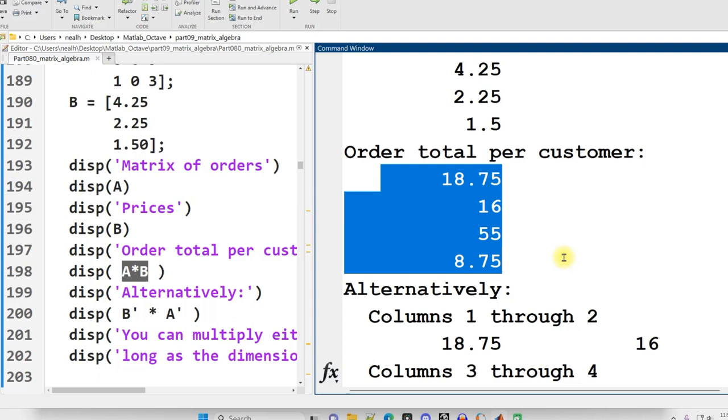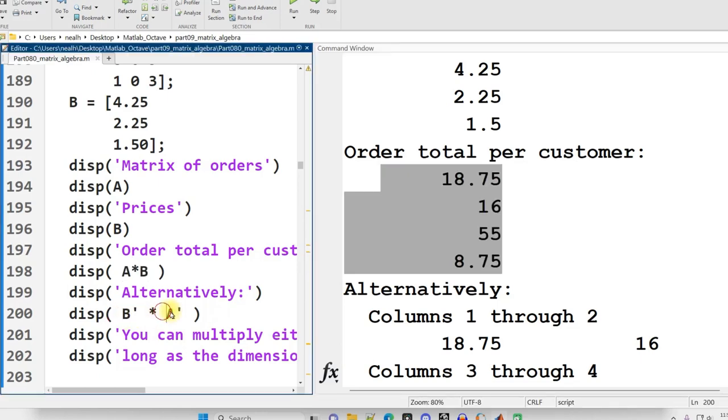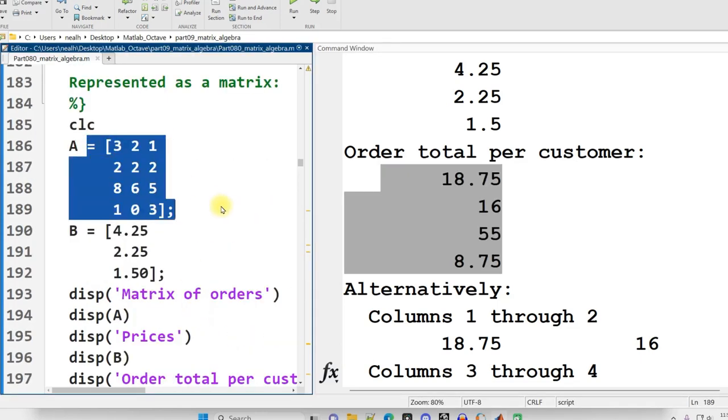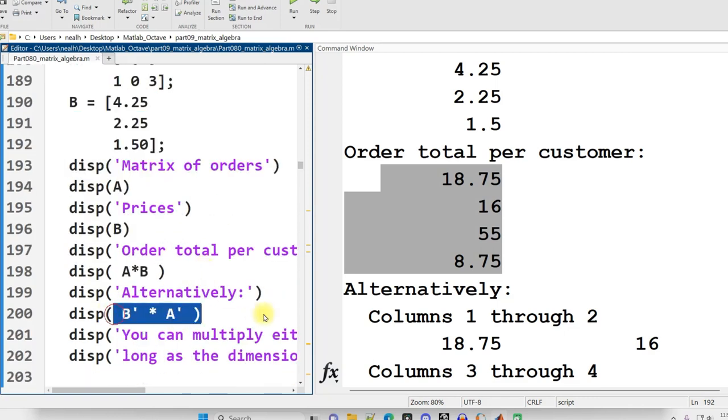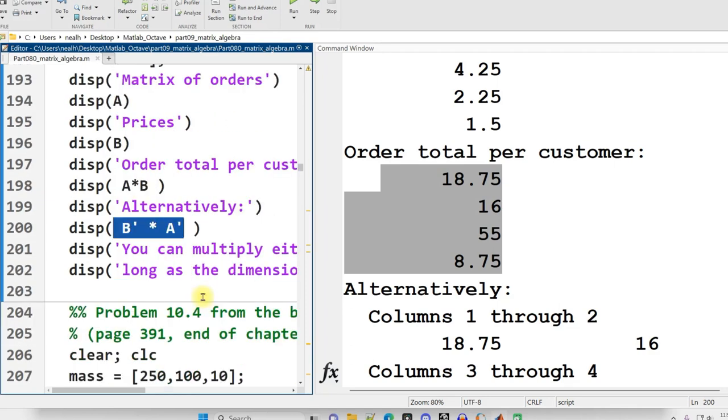This is not the only way to calculate that. I could also multiply the B transpose times the A transpose, or I could have organized the customers originally along columns, and the prices originally along rows, and just matrix multiplied without the transposes. There are different ways to set this up, but there are also incorrect ways to set this up.